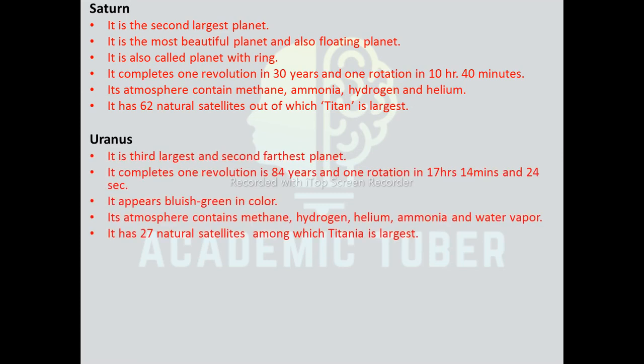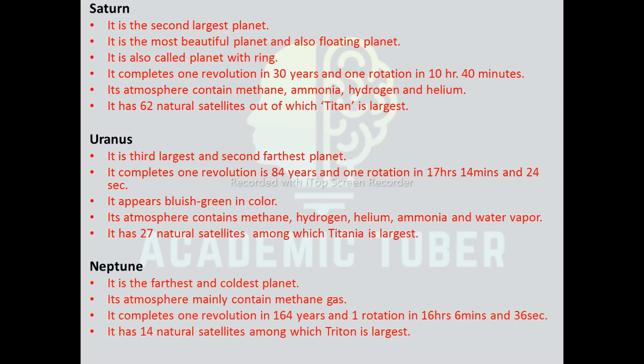Uranus: it is the third largest planet. It accomplishes one revolution in 84 years and one rotation in 17 hours 15 minutes and 24 seconds. It appears bluish-green in color and its atmosphere contains methane, hydrogen, helium, ammonia, and water vapor. It has 27 natural satellites, among which Titania is the largest.